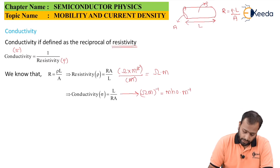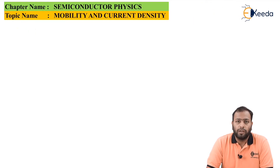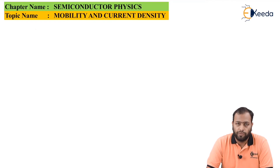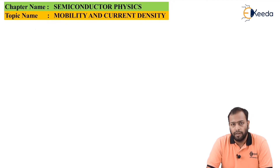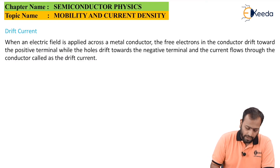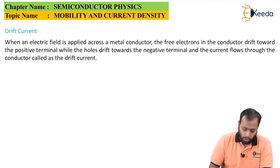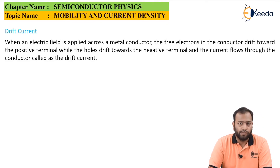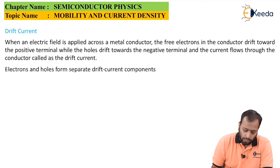This completes the mobility part. The cause is mobility and the effect is current. Current is defined in two ways: drift current and diffusion current. For drift current: when an electric field is applied across a metal conductor, free electrons drift towards the positive terminal while holes drift towards the negative terminal. The resulting current is called drift current, which is essentially what we normally refer to as conventional electric current. Electrons and holes form separate drift current components.